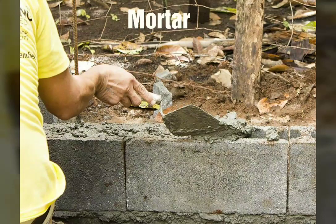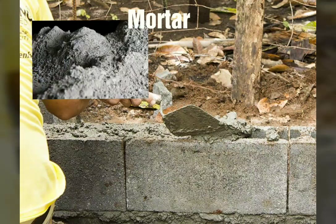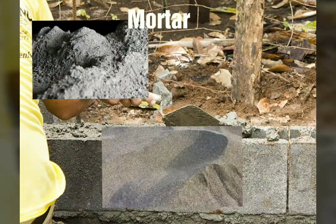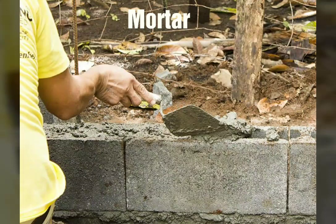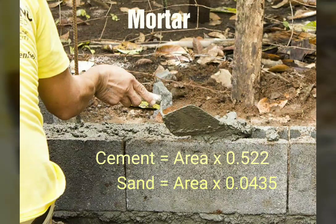Next is to find the bonding material for laying the concrete hollow blocks into your wall, which is called mortar. Materials needed are cement, sand, and water, assuming we will use 4-inch thick concrete hollow blocks. To find the quantity of cement, multiply 0.522 by the wall area, and for sand, multiply 0.0435 by the wall area.